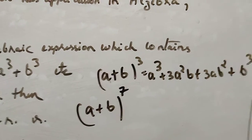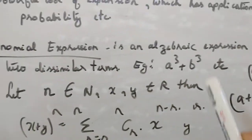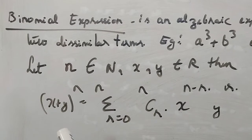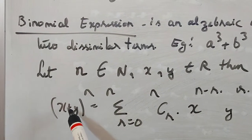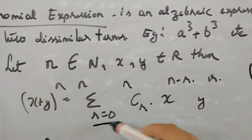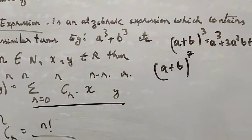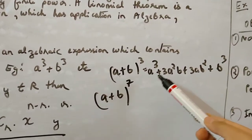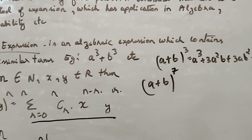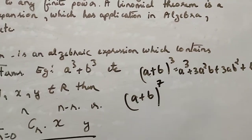For higher powers, it is very easy when we use the binomial theorem formula. If it is x plus y to the power 7, you use this formula and get a full expansion. The binomial theorem helps you calculate when the power is raised to any finite number.